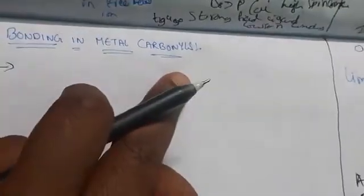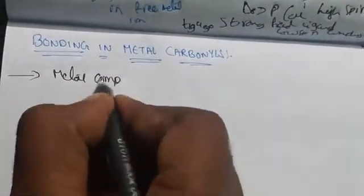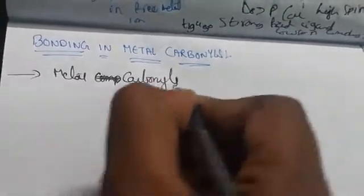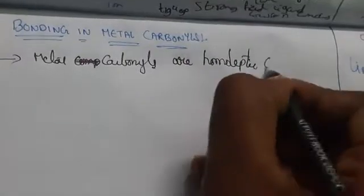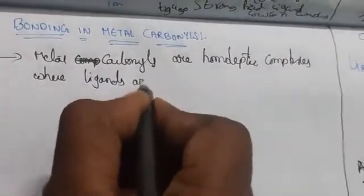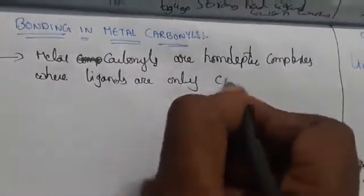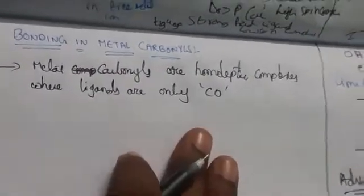The carbonyl group is CO. We call these homoleptic complexes because they are having the same type of carbonyl group. So metal carbonyls are homoleptic complexes where ligands consist only of CO groups. Most of the transition metals will form metal carbonyls.